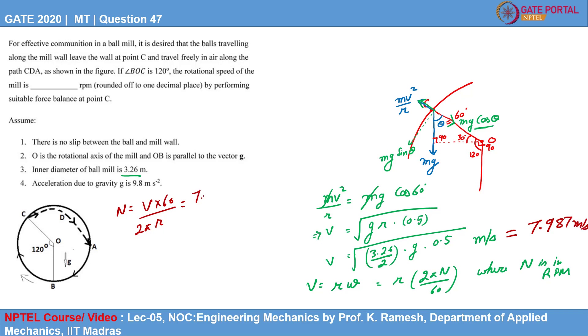We will use this value, 7.987 into 60 upon 2 into pi into R. What is R? R is 3.26 by 2. Upon solving this, we will get the value of N to be 16.52 RPM.